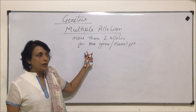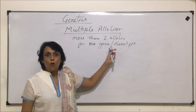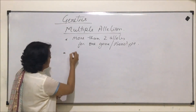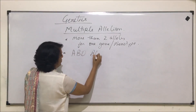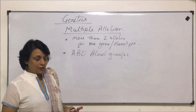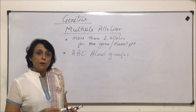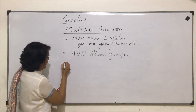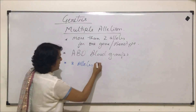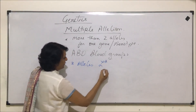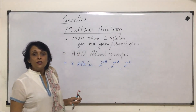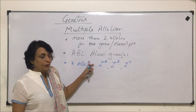That means more than two forms of a gene controlling one character or phenotype. The example we discuss for multiple allelism is ABO blood groups. There are three alleles which are responsible for blood group: IA, IB, and IO, which control the blood group.